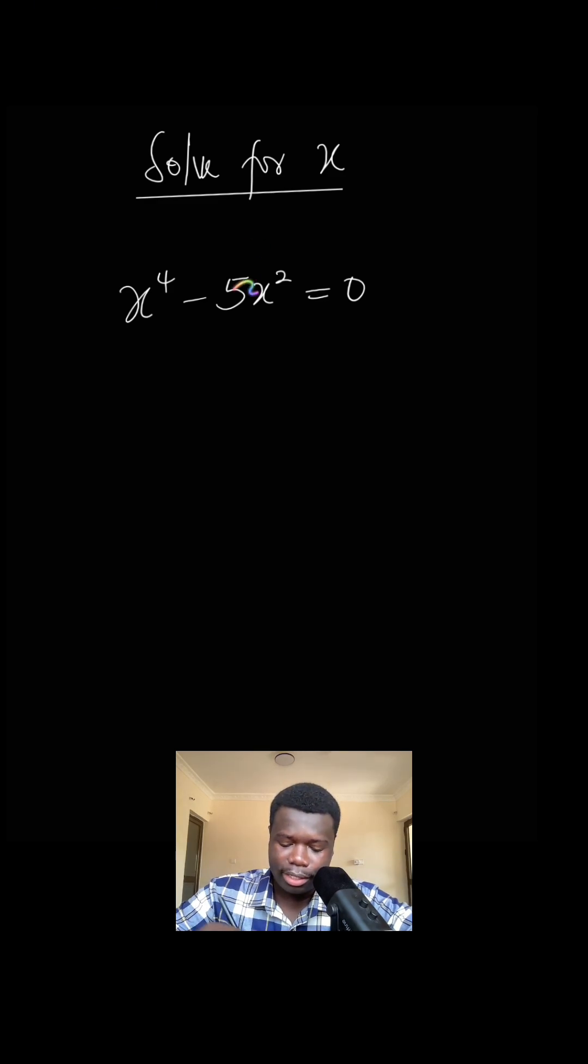You might say you want to move this to the other side so that you can cancel out and find a value for x, but with that way you might not get all the answers. Because it's a polynomial, we have to get multiple values for x, but when you solve it this way you might end up getting only one value for x.